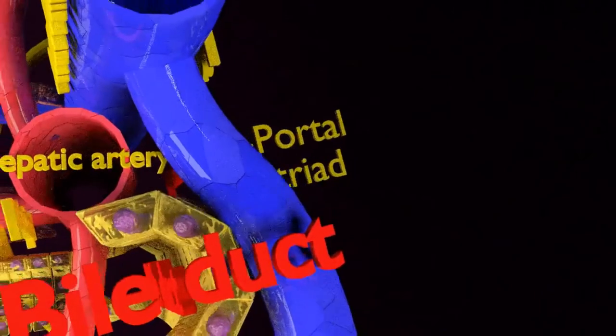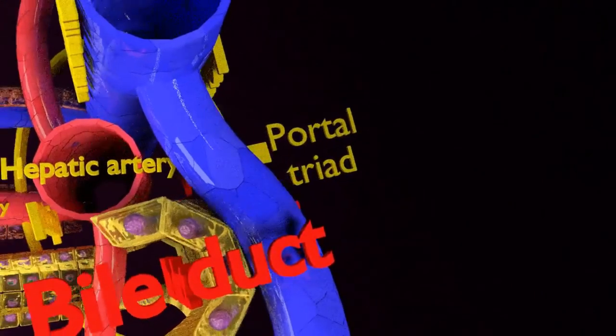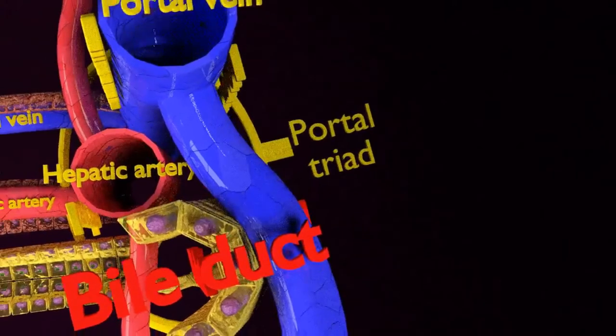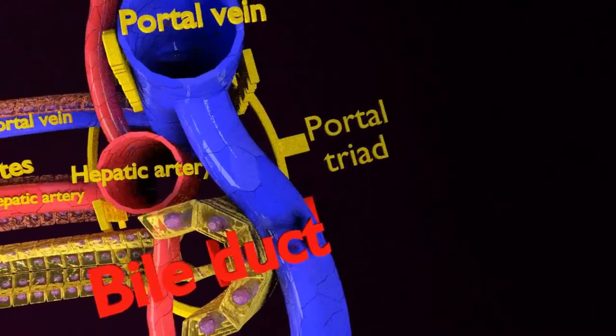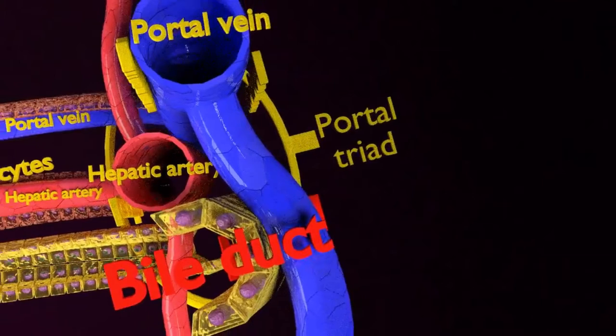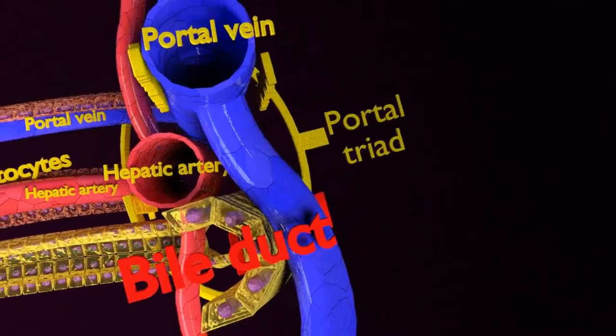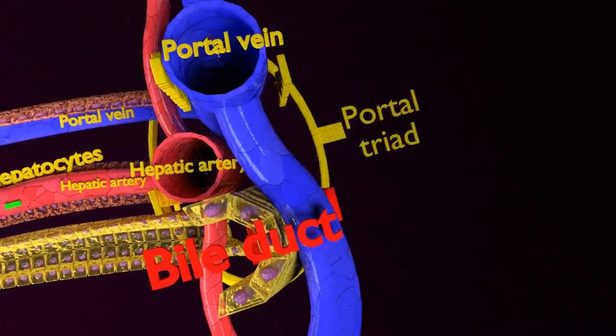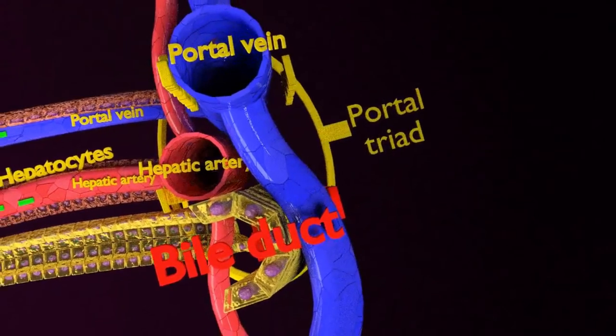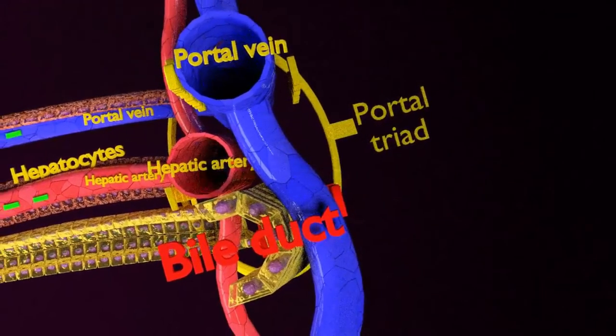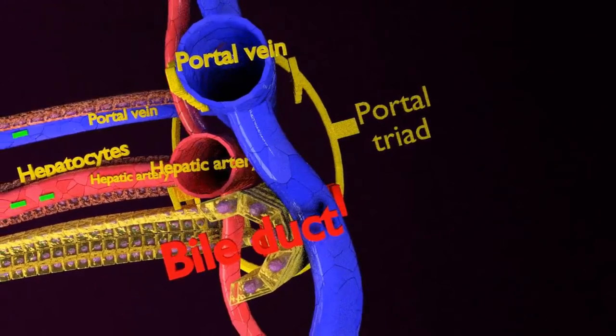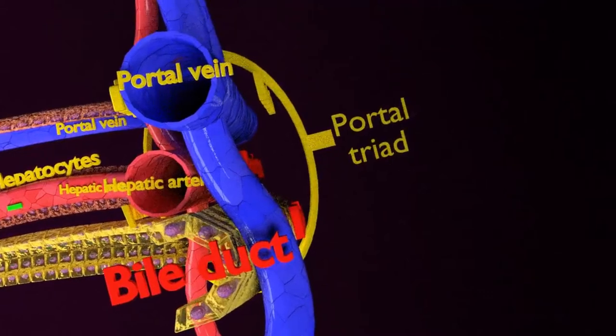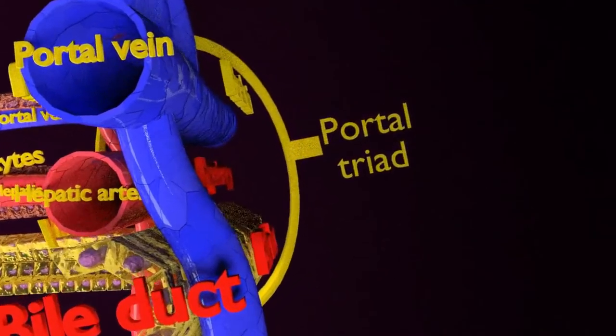The liver has a dual blood supply through the portal vein and hepatic artery. This dual blood supply provides sufficient protection against infarction of the liver. The hepatic portal vein and hepatic artery deliver oxygen and nutrients into the blood's sinusoids. This close relationship between the hepatocytes and surrounding blood enables many metabolic processes to take place.